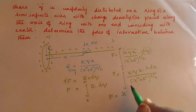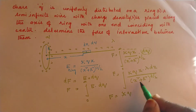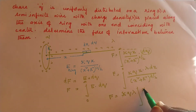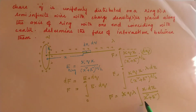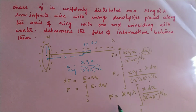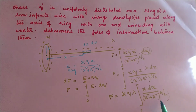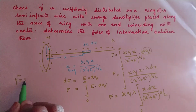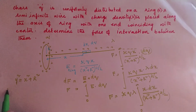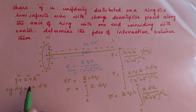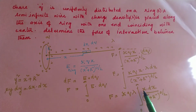Taking the constants kQlambda outside, we need to evaluate ∫₀^∞ x dx / (x² + R²)^(3/2). We solve by substitution: let y² = x² + R², so 2y dy = 2x dx, meaning x dx = y dy. The integral becomes ∫ y dy / y³ = ∫ dy/y² = −1/y.